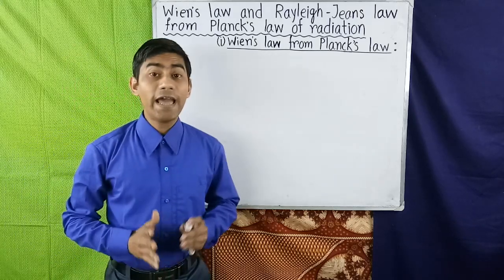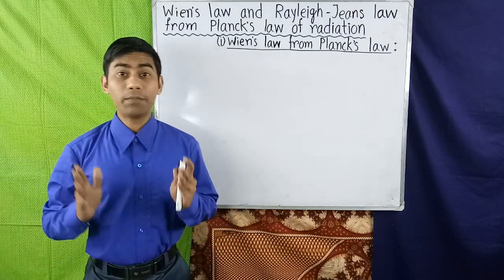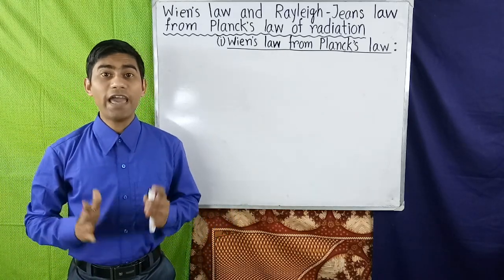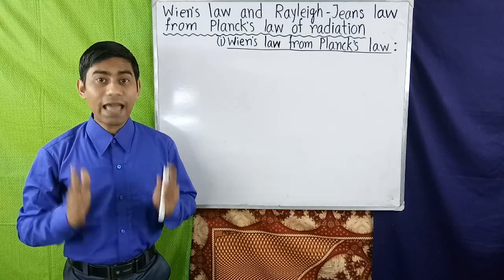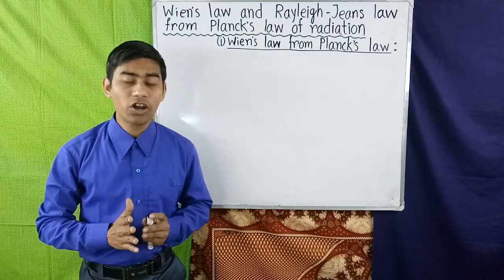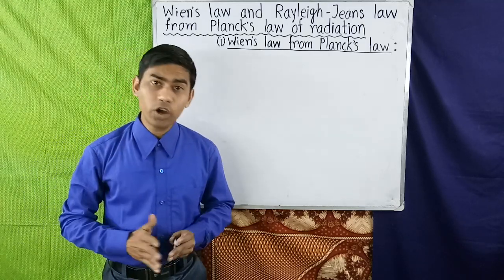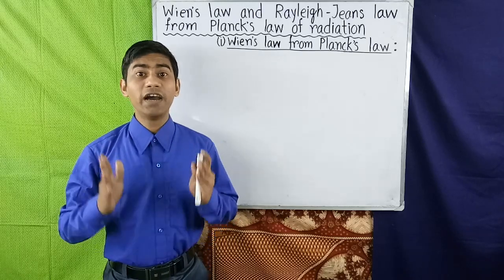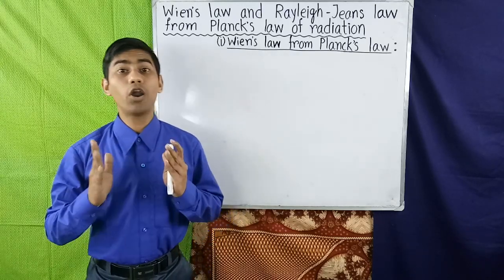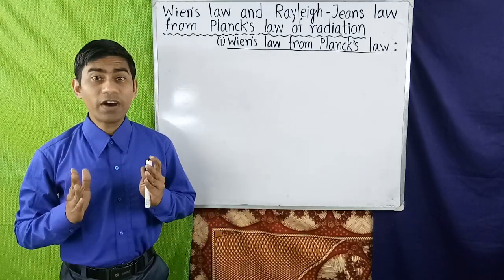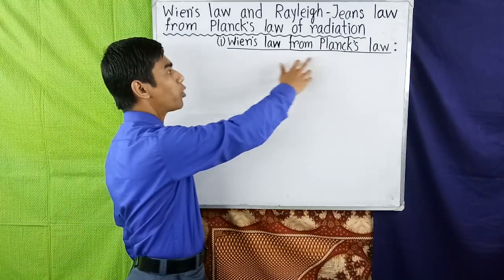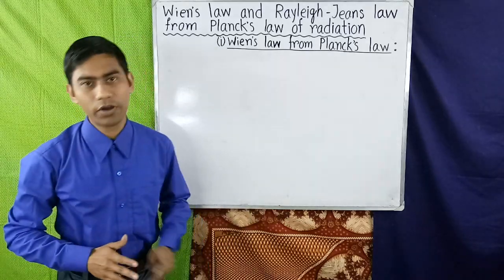Wien's law and Rayleigh-Jeans law can be derived from Planck's law as a special case. Planck's law reduces to Wien's law for short wavelengths, and Planck's law reduces to Rayleigh-Jeans law for long wavelengths. We first derive Wien's law from Planck's law of radiation.